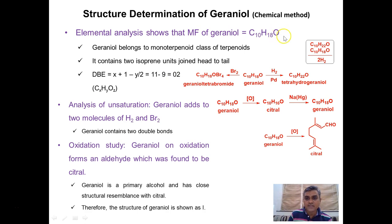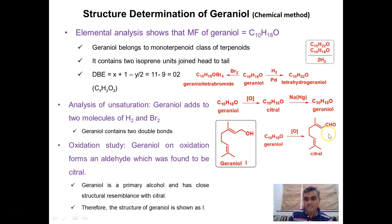Now let us analyze the nature of the oxygen. A simple oxidation experiment was performed: geraniol was oxidized and the product formed is C10H16O, which was found to be an aldehyde. Aldehyde formation indicates that the starting material, geraniol, must be an alcohol. Further investigation of this oxidation product revealed it to be the citral molecule, whose structure was already discussed in lecture two. Since citral is an alpha-beta unsaturated aldehyde, geraniol must be an allylic alcohol.